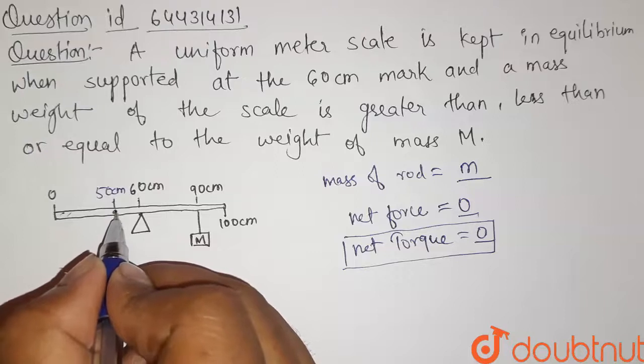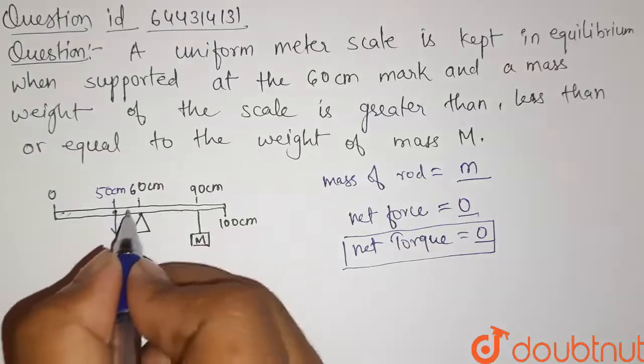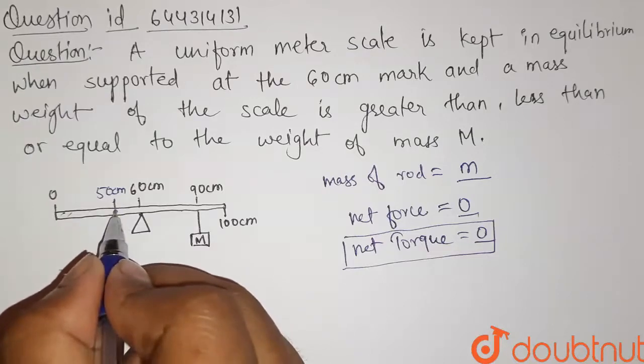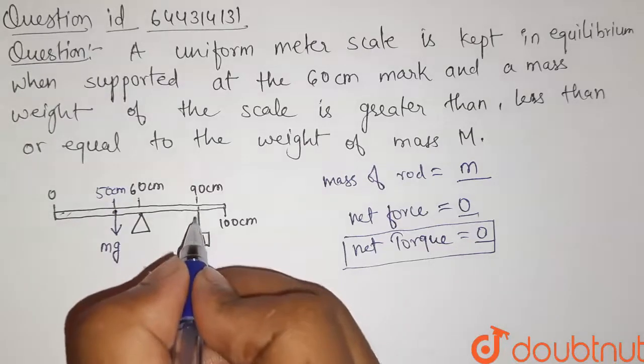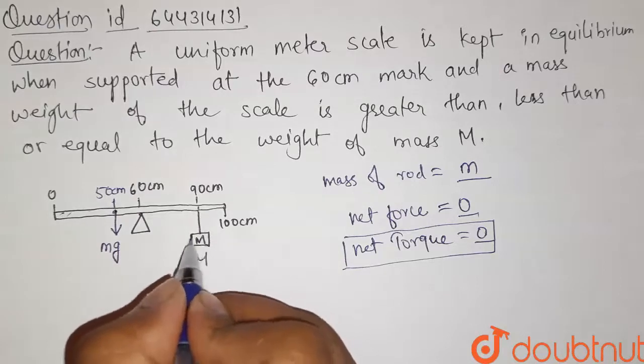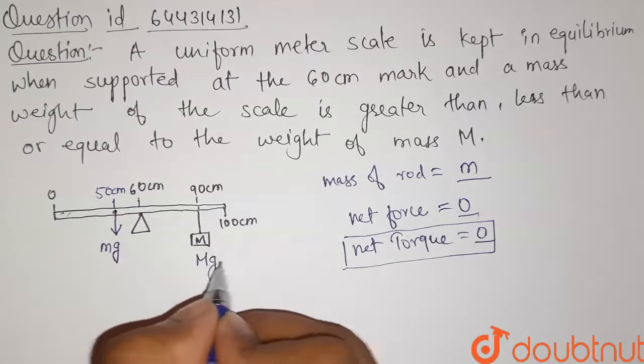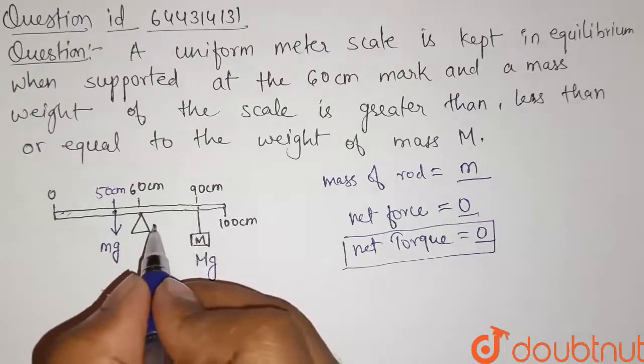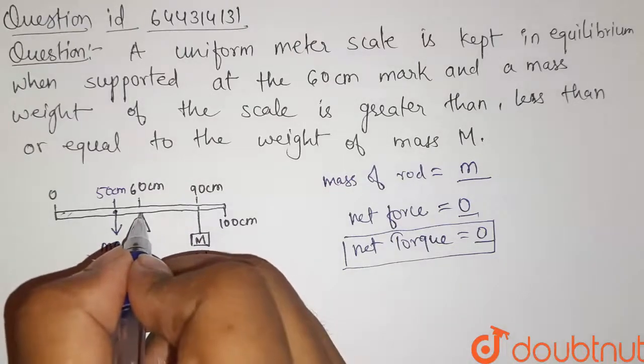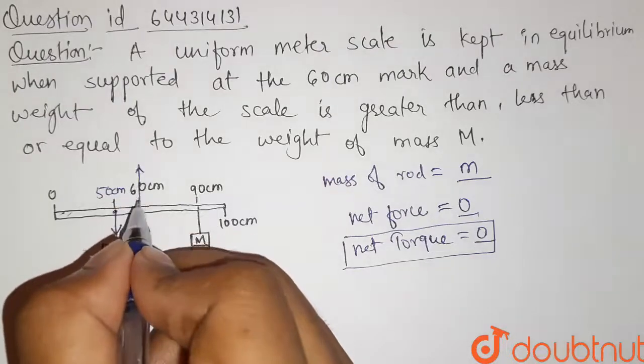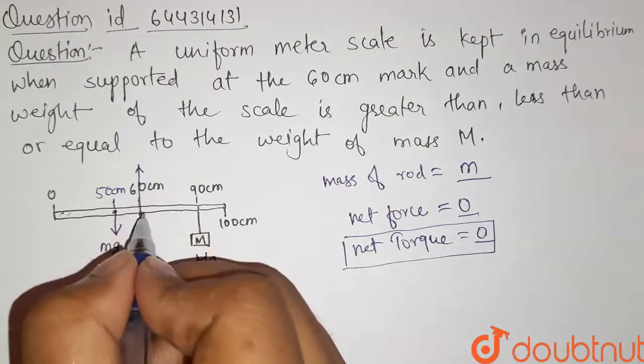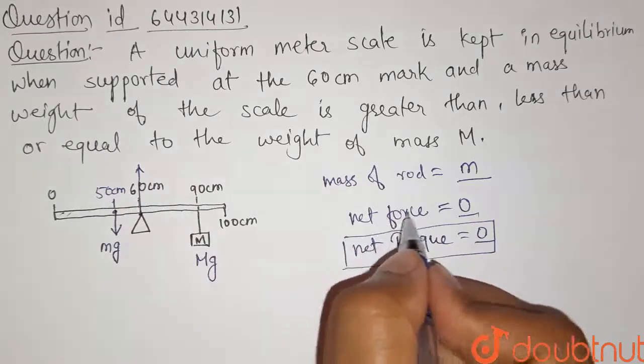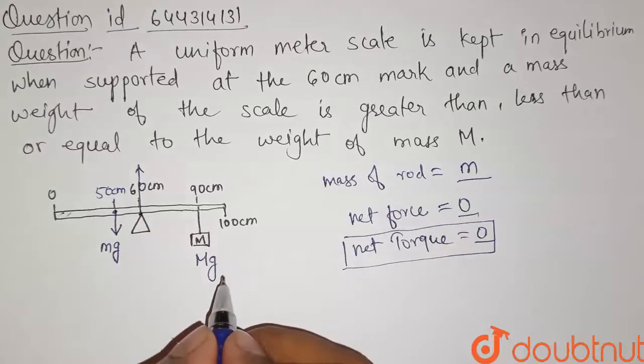So we can suppose one force that is equal to the weight of this rod, that is Mg, is acting in downward direction at this point. And here one force that is equal to weight of this block, that is capital Mg, is acting downward at this point. And also a force due to hinge is acting on this rod in the upward direction which is maintaining the translational equilibrium, that is net force equals to zero.